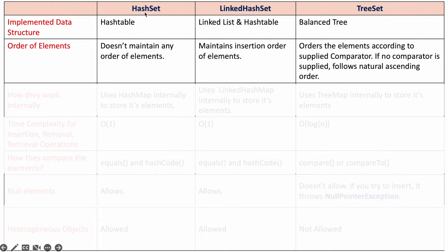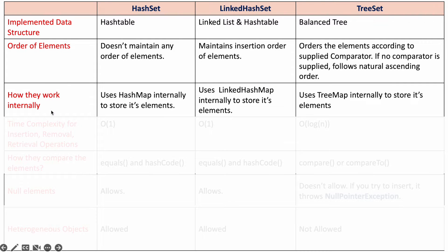So the order of elements: HashSet follows hash code order, LinkedHashSet follows insertion order, and TreeSet follows comparator or default natural sorting order. Internally, HashSet uses HashMap to store its elements, LinkedHashSet uses LinkedHashMap to store its elements, and TreeSet uses TreeMap to store its elements.